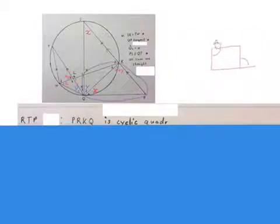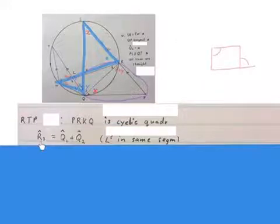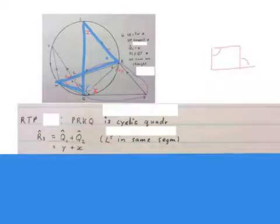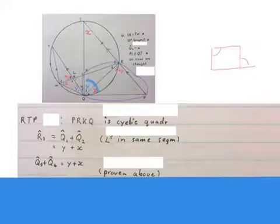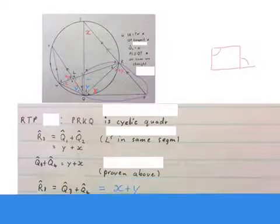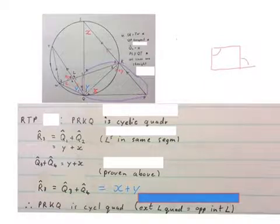In this case, there's more than one way to do it, but I'm going to go for this one. I wrote angle r3 is equal to q1 plus q2, angles in the same segment. You can see it over here—if you open up here and you close it here, those two angles are equal, and that's equal to x plus y. You can see the x plus y in the corners there. Then q3 plus q4 is also x plus y. We can see it over there. Our reason is proven above—we already proved it earlier. Then we can write angle r3 is equal to angle q3 plus q4. Then you make your final statement: you say PRKQ is a cyclic quad, and what's your reason? The exterior angle of a quadrilateral is equal to the opposite interior angle.